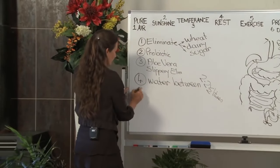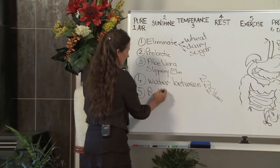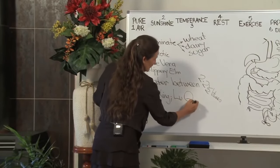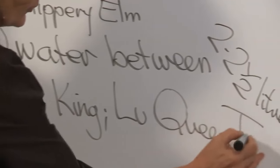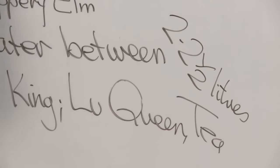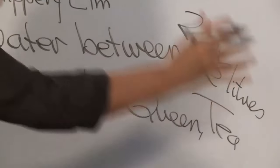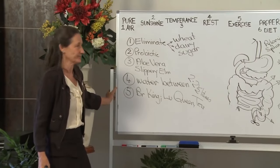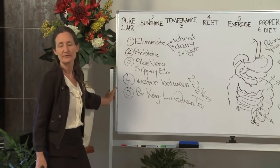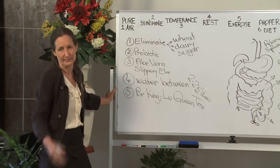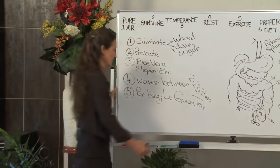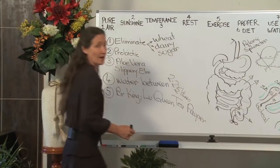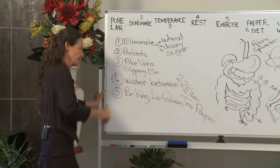Number five, breakfast like a king, lunch like a queen, and tea like a pauper. When your body goes to bed, your gut wants to sleep and if you go to bed with a full stomach, your gut cannot sleep. If it does go to sleep, you'll die of ptomaine poisoning because all the food will rot. Tea like a pauper and sometimes paupers don't eat. You don't fuel your car up at the end of the journey, you fuel it up at the beginning of the journey.